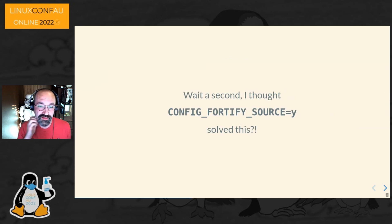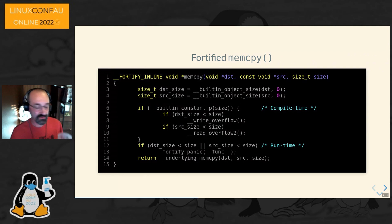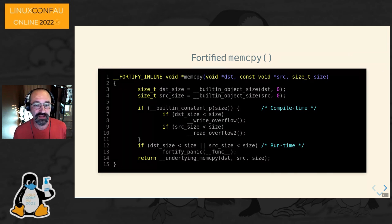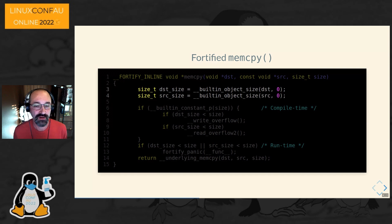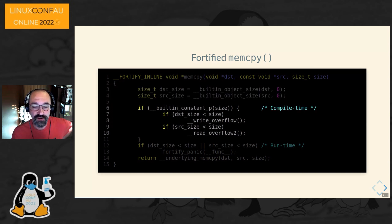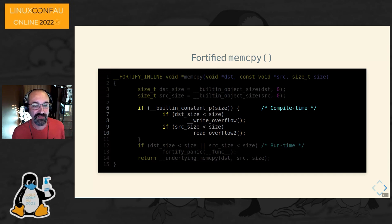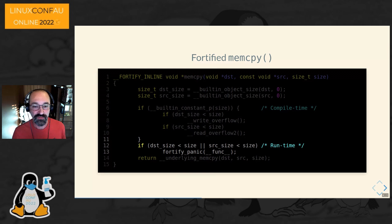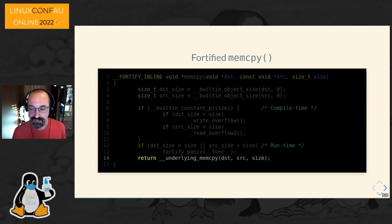Some of you may be thinking: I thought config FORTIFY_SOURCE solved this. Let's answer that question. If you take a look at what the fortified memcopy looks like, the top part is where we get the size of the object — what's the destination size, what's the source size. The next chunk is the compile-time portion: if we know the size we're going to be copying at compile time, it's a fixed size and we can do the checking immediately and throw a compile-time warning. And finally, if it wasn't a built-in constant, we can do the runtime checking. If everything is fine, we go on and actually do the memcopy.